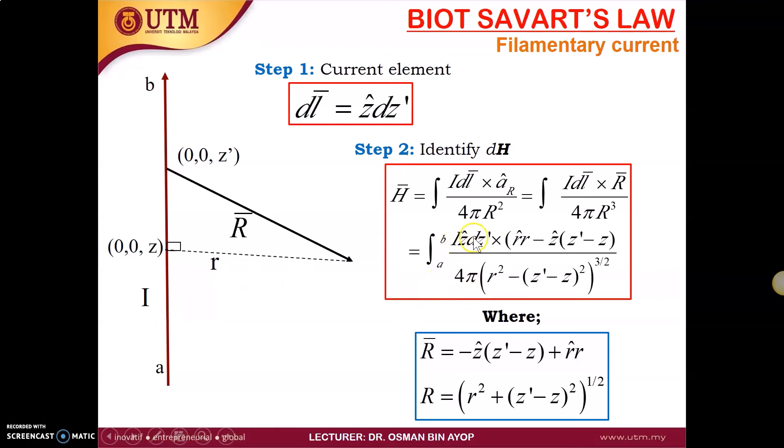We put inside everything we know, the limit which is the length of our filament from A to B. So our magnitude of current I, IZ, dZ prime, cross product with this vector R. Vector R is Z prime minus Z in the direction of negative Z, and then we have R in the direction of R. And this is how we find the magnitude. R cubed equals R squared plus (Z prime minus Z) squared and then 3 over 2.